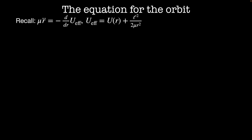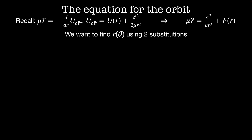Now that we know what behaviors to expect from the orbits, let's have a go at solving them analytically. We'll start with the equation for an orbit in a generic central force. The force in the r direction, mu r-double-dot, is equal to minus d/dr of the effective potential, where U_effective equals the potential from the central force plus the angular momentum squared divided by twice mu times r squared. The second term is the potential coming from the conserved angular momentum. If we write this as a standard Newtonian force, the force in the r direction is given by the centripetal force L squared over mu r cubed plus the central force. We'll use this to solve for the shape of the orbit, r as a function of theta, using two substitutions.